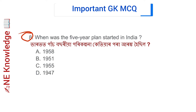Question number 8: When was the Five-Year Plan started in India? Options: 1958, 1951, 1955, and 1947. Correct answer: Option B — 1951. The Five-Year Plan was started in 1951, launched by the first Prime Minister Jawaharlal Nehru.